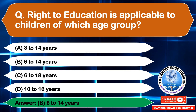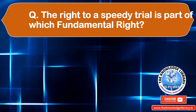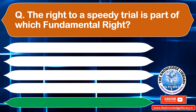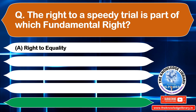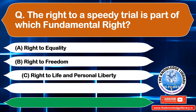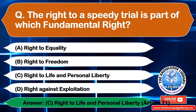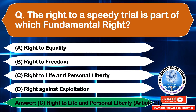The next question is: the right to a speedy trial is part of which fundamental right? Option A: Right to Equality, Option B: Right to Freedom, Option C: Right to Life and Personal Liberty, Option D: Right Against Exploitation. The correct answer is Option C: Right to Life and Personal Liberty.